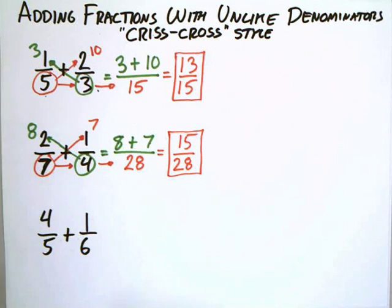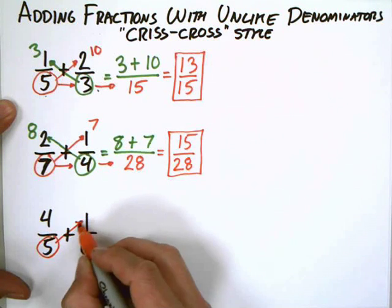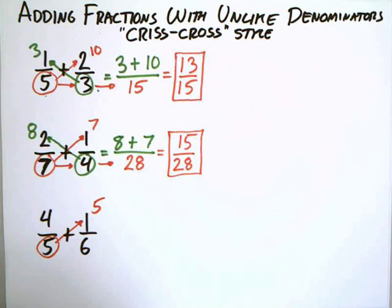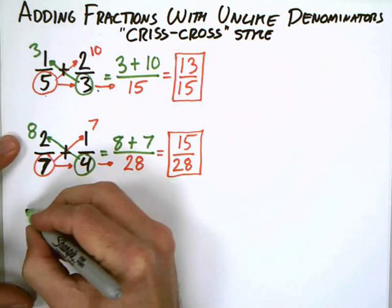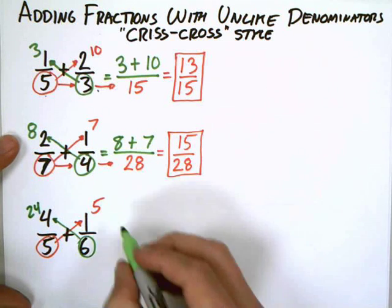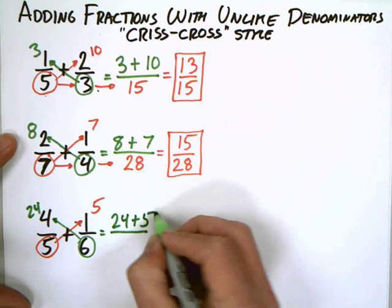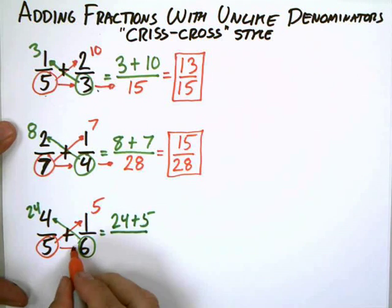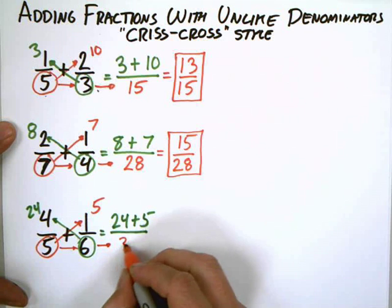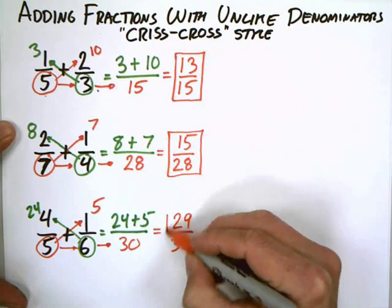So last example, I have 4 fifths plus 1 sixth. So I'm going to multiply the 5 times 1. That's going to be a 5. I'm going to multiply the 6 times 4. That's going to be 24. And my numerator is now going to be 24 plus 5. And my denominator, 5 times 6 is 30. So I'm going to get a grand total of 29 over 30.